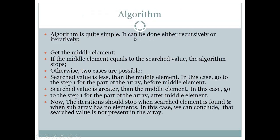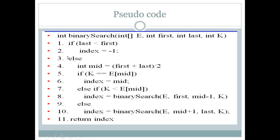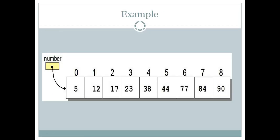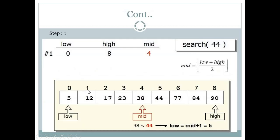This is the recursive algorithm for binary search, which we will understand through an example. The input values are: 5, 12, 17, 23, 38, 44, 77, 84, and 90 — nine values in total. From these, we have to find a specific key. The data must be in sorted order; here the data is sorted in ascending order. If we want to find 44, our search key element is 44.